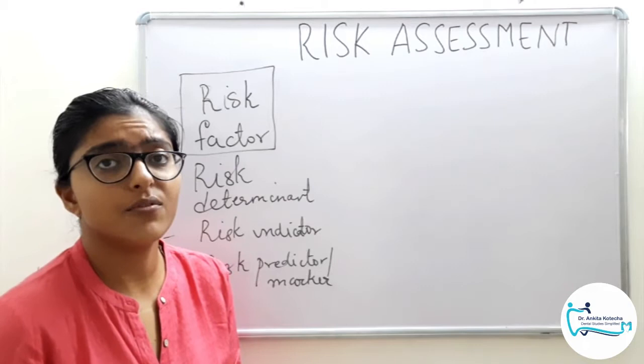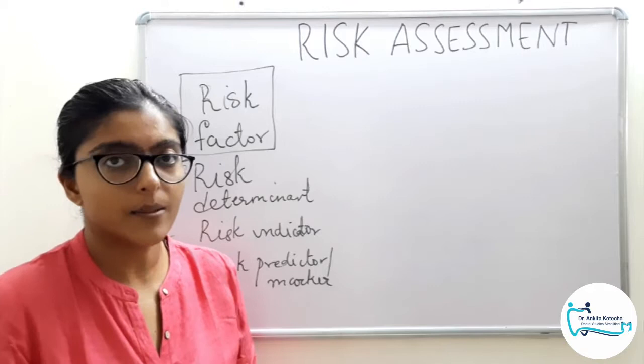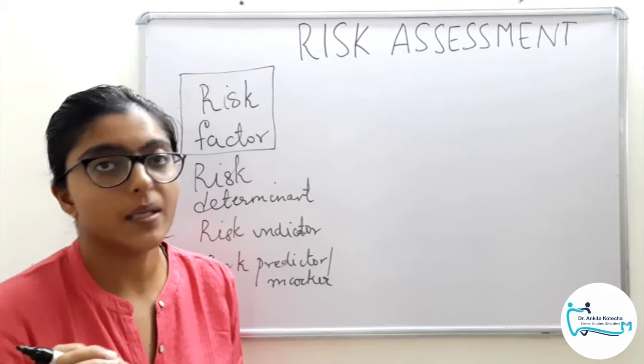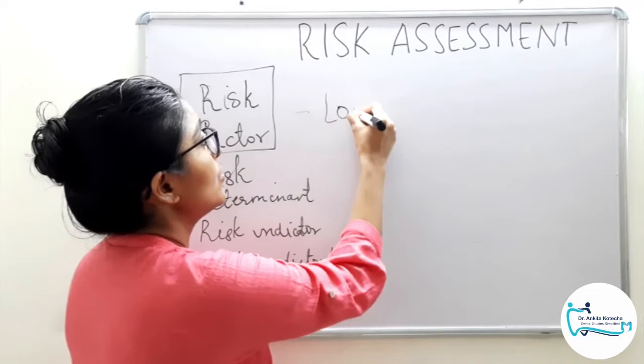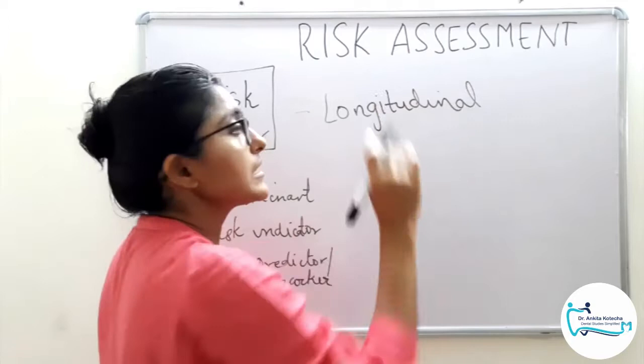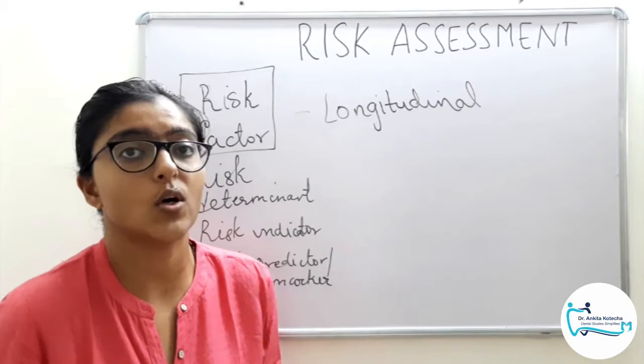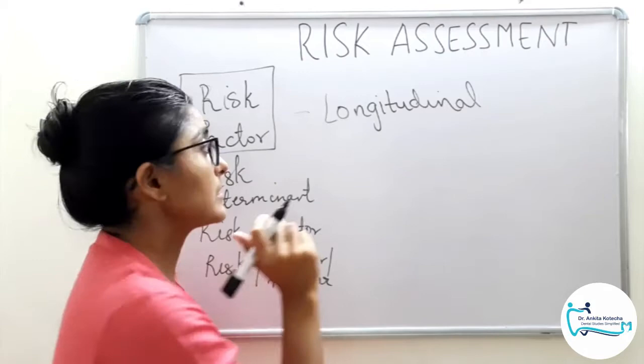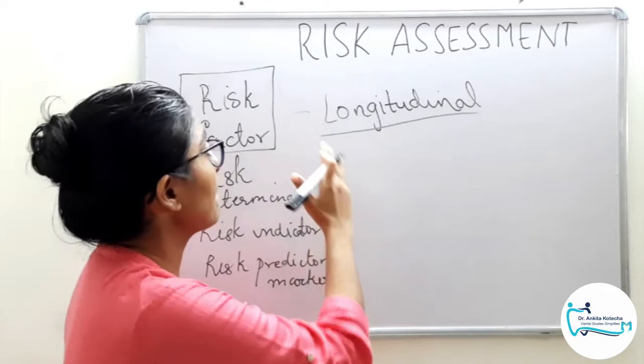Risk factors — be they environmental, behavioral, systemic, or biological such as genetics — increase the likelihood or chances of developing the disease but do not directly cause it. A second main point is they are confirmed through longitudinal studies. Understanding that you are aware of various epidemiological studies, risk factors are confirmed through longitudinal studies. Longitudinal studies provide confirmation.